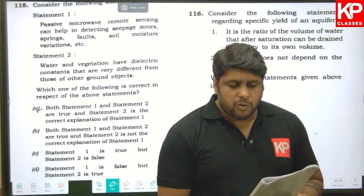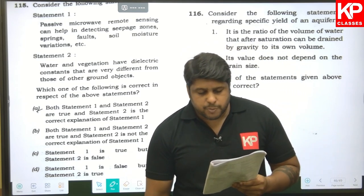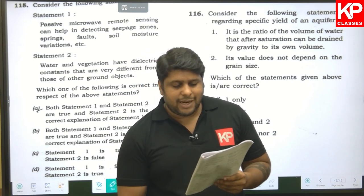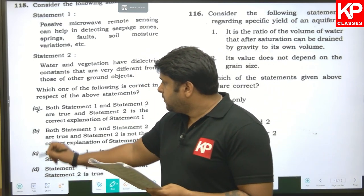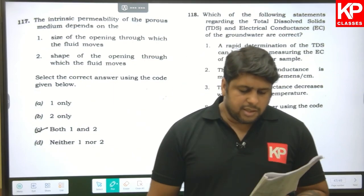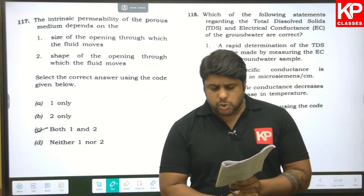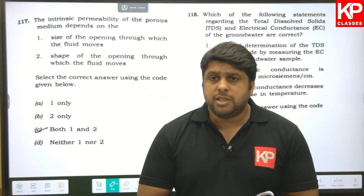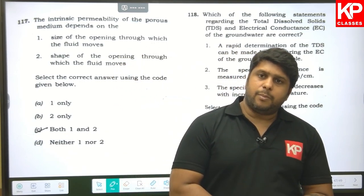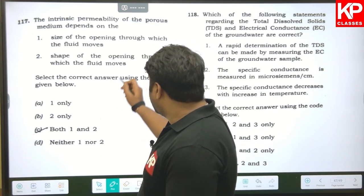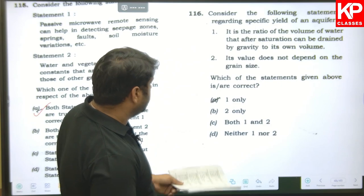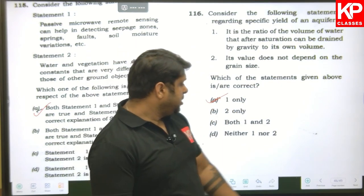Question one hundred and sixteen: passive microwave remote sensing can help detect seepage zones, spring falls, and soil moisture variations (correct). Water and vegetation have dielectric constants very different from those of dry soil (correct). Both statements are correct and A is the answer. Question one hundred and seventeen: regarding specific yield of an aquifer — it is the ratio of the volume of water that after saturation can be drained by gravity to its own volume (correct). Its value does not depend upon grain size — this is wrong, specific yield does depend on grain size and shape. So only statement one is right — A is the answer.